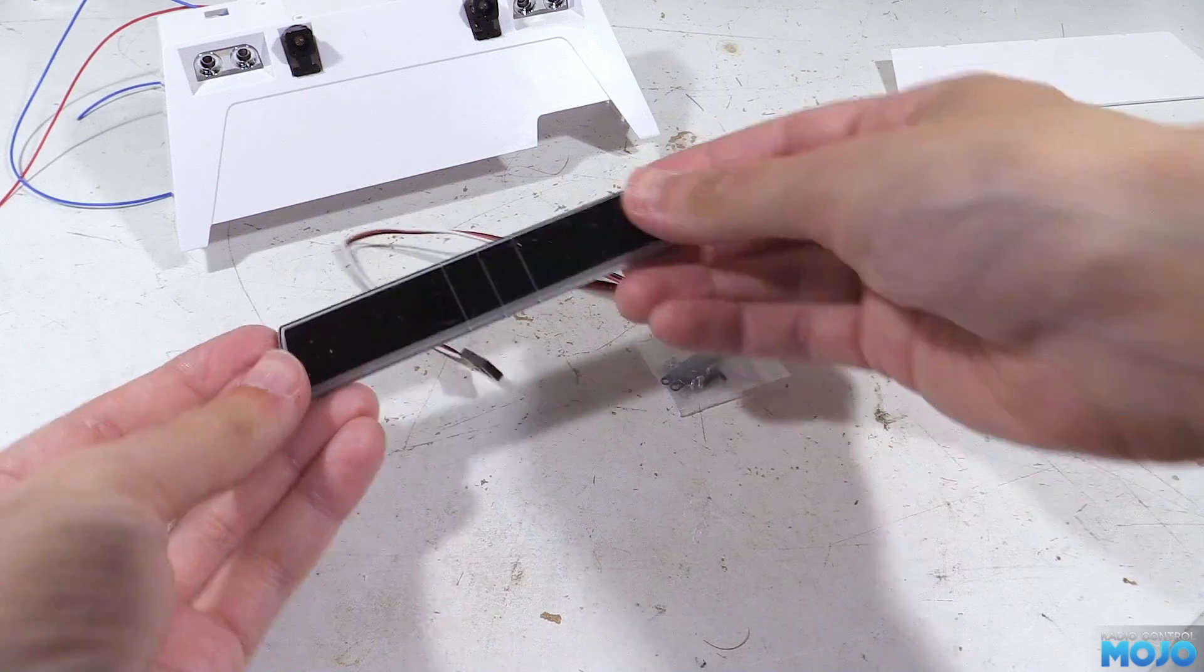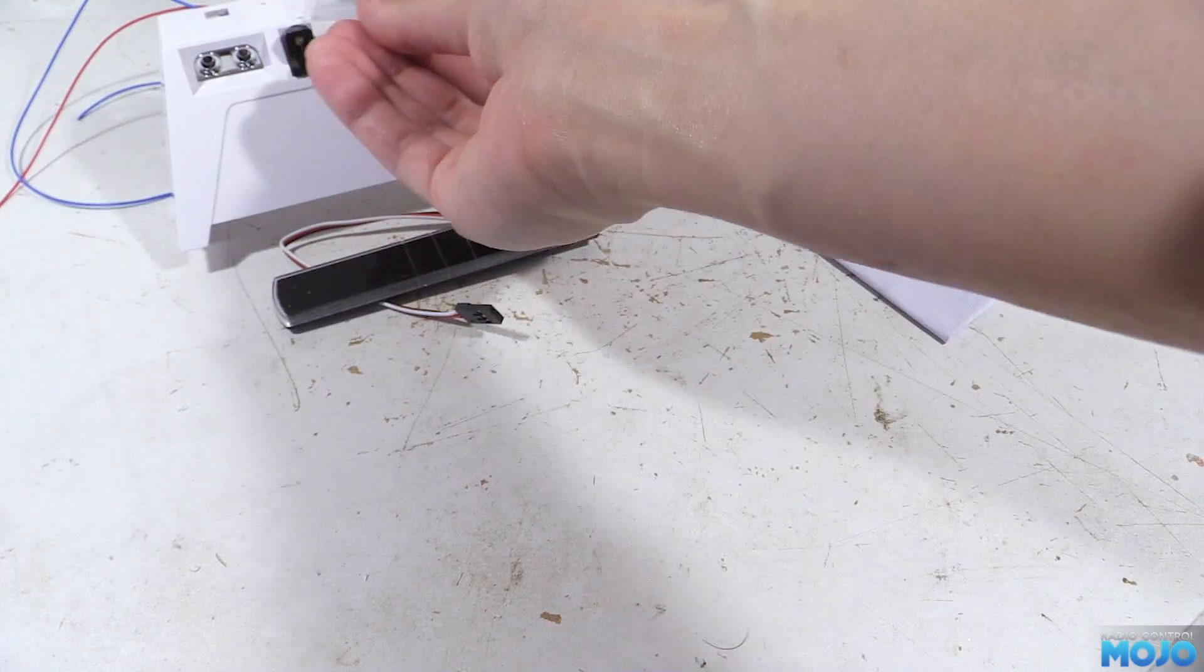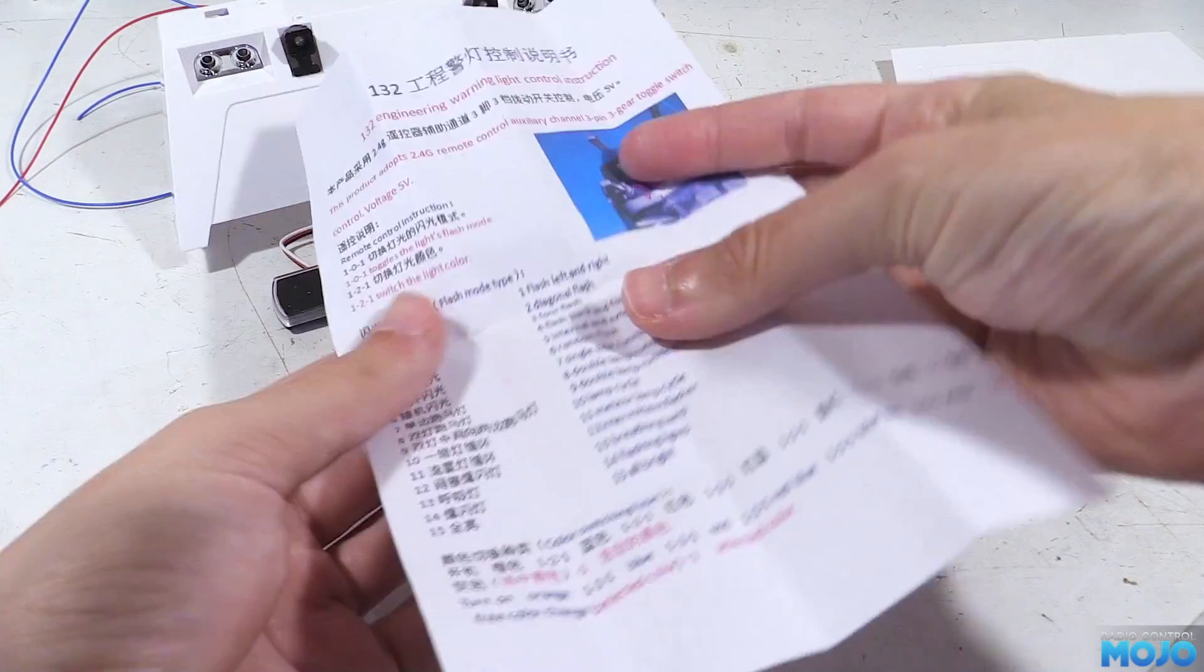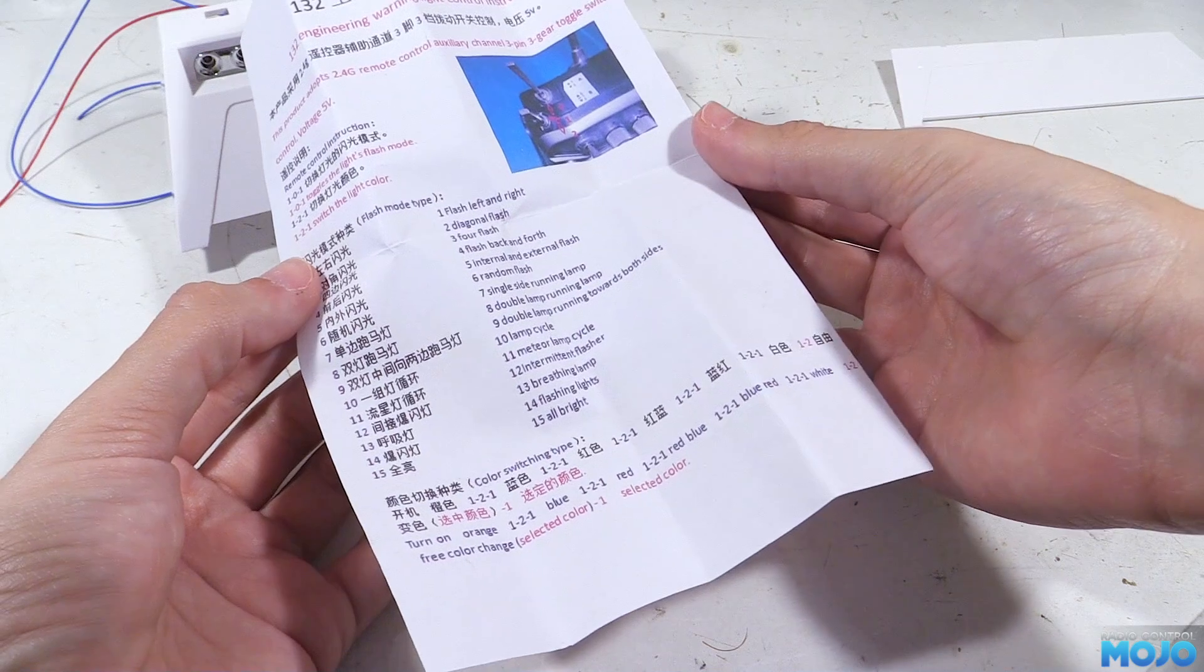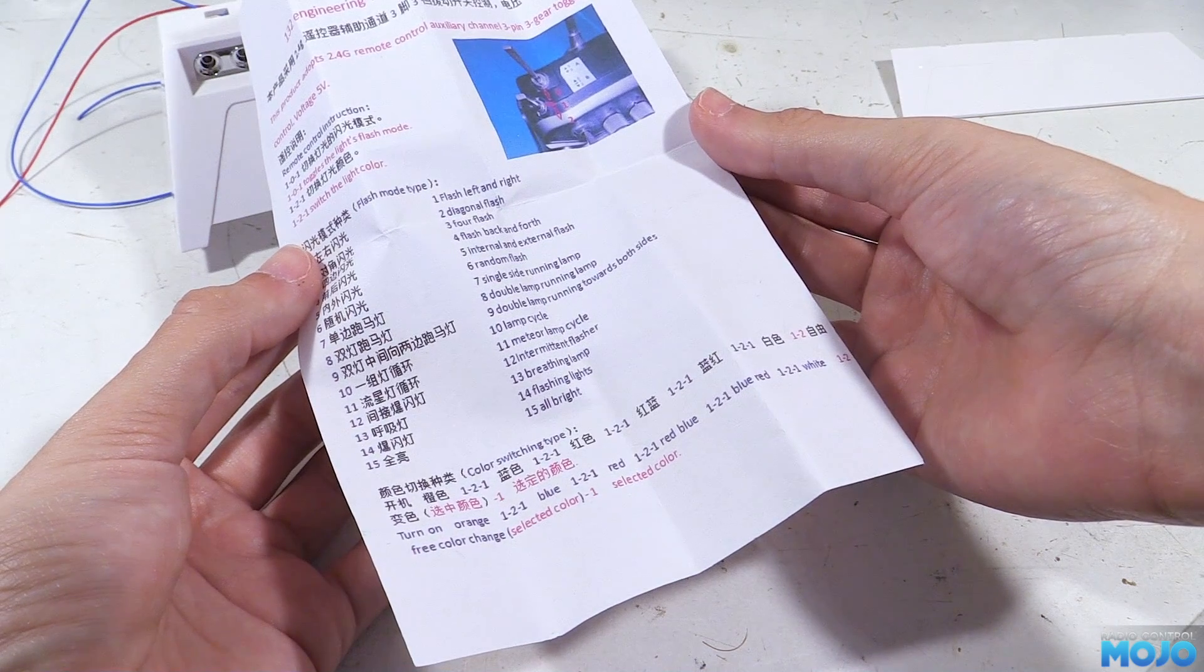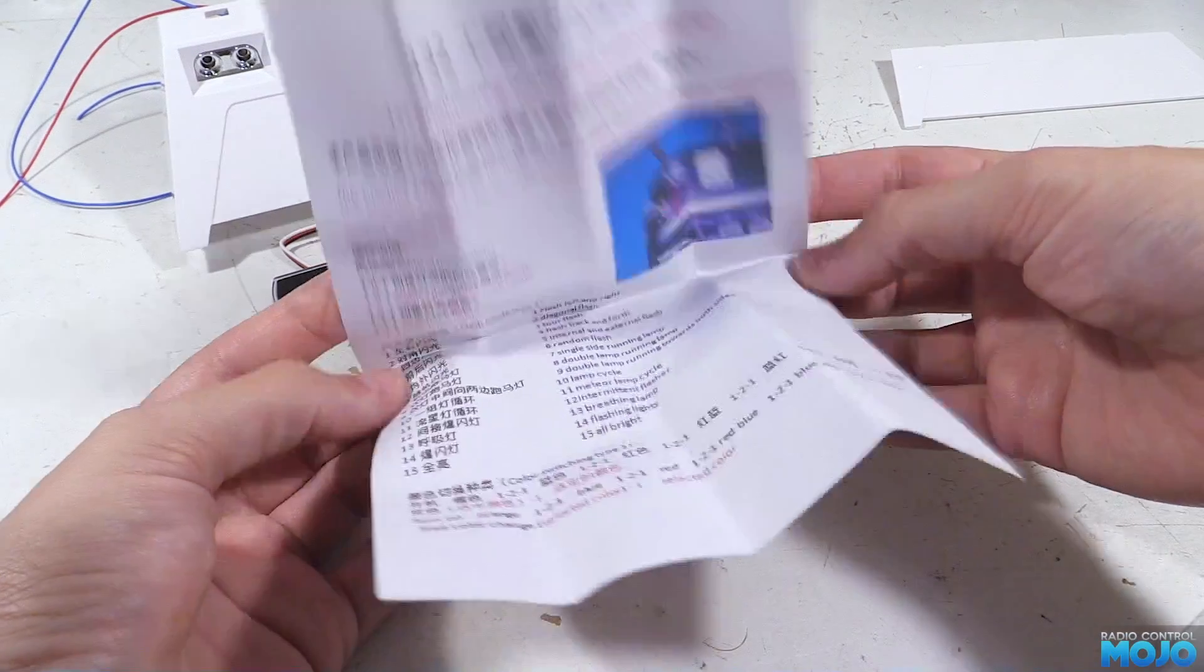Next we have that super flashy beacon of finest Chinese quality. Actually I do joke a bit, the plastic lid of the lens is a bit iffy but the lights and electronics are top notch. The instructions are a bit Chinese too but you can get enough from it to work out how to use it.